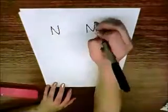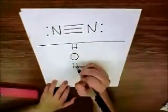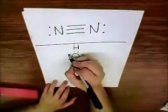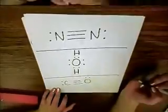And then, when it decomposes, it decomposes into these things: N2, H2O, and CO. Triple bond on N2, single bonds on H2O, and a triple bond of carbon monoxide.